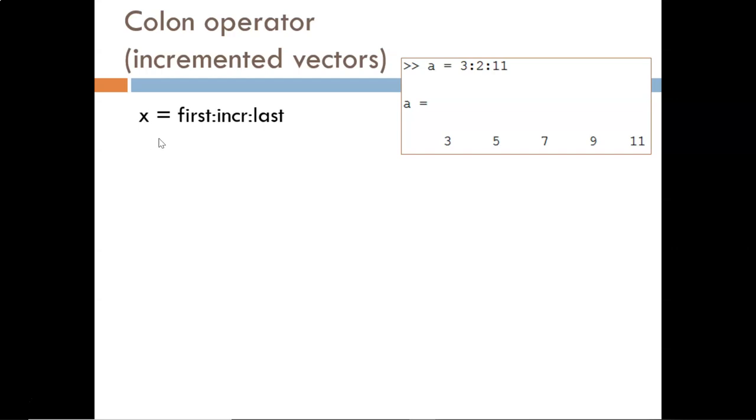Begin with some variable equals, a normal assignment operation. Then, separated by colons, list the starting value, the increment amount, and the ending value.